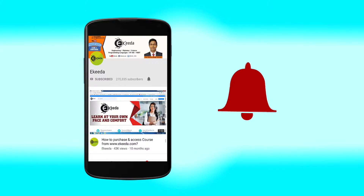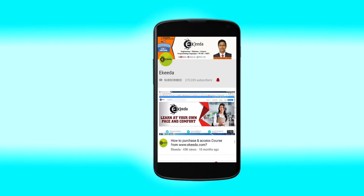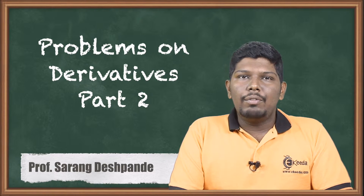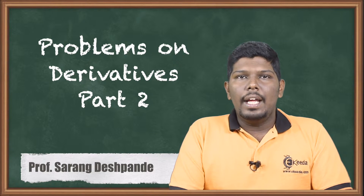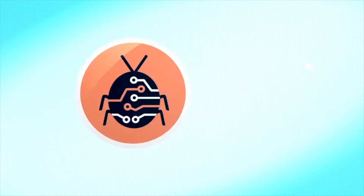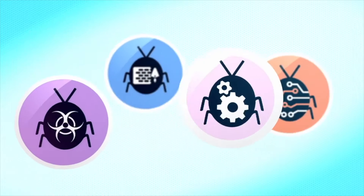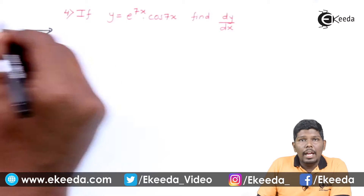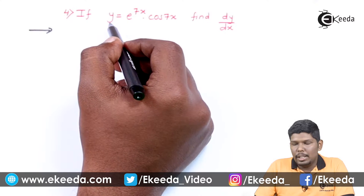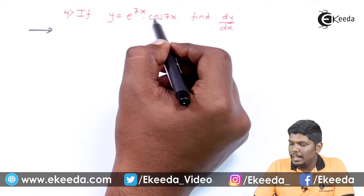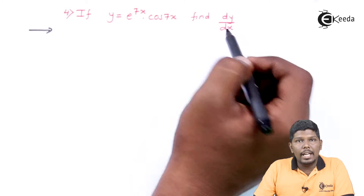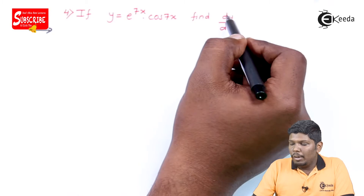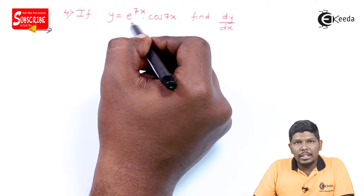Click the bell icon to get the latest videos from Ikeda. Hello friends, in this video we are going to continue the last video — problems based on derivatives. We have the first problem: if f(x), or y, is equal to e raised to 7x into cos 7x, find dy/dx. Here, two functions are getting multiplied, so we will find the derivative using the UV rule.